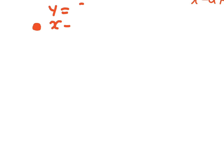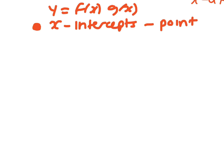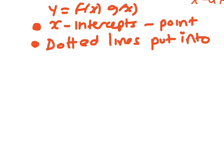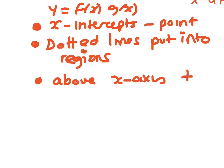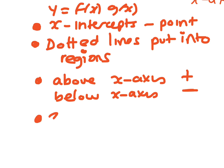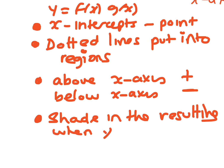To summarize: when you've got your two curves sketched and you want to draw f of x times g of x, first find the x-intercepts and put a dot there. Then put dotted lines to divide the graph into regions. In each region, check whether each curve is above the x-axis — positive y-value — or below — negative. Then shade in the resulting region based on what you get when you multiply the two graphs.